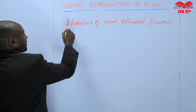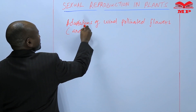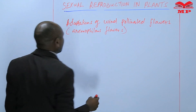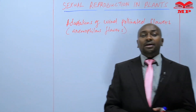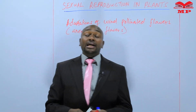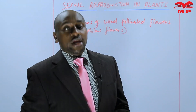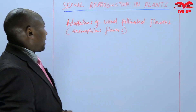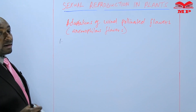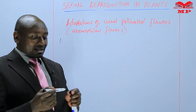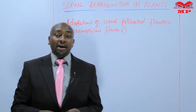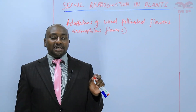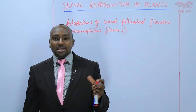These wind-pollinated flowers are also known as anemophilous. These flowers have special adaptations that enable wind to be an effective agent of pollination. One of the adaptations is that these flowers are small in size, whereby petals may or may not be absent. They are very inconspicuous — you cannot easily notice them.